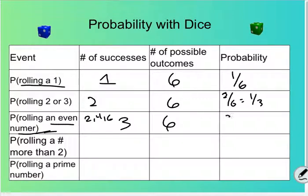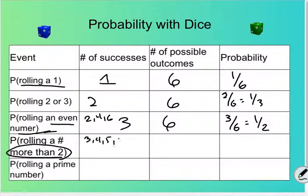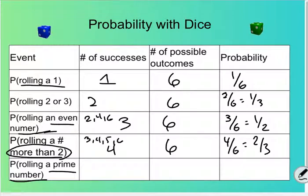Rolling a number more than two — that's three, four, five, and six — so that's four possibilities out of six, which simplifies to two thirds. Rolling a prime number — two, three, and five are your only prime numbers on a die — so that's three out of six, which as we saw above is one half.